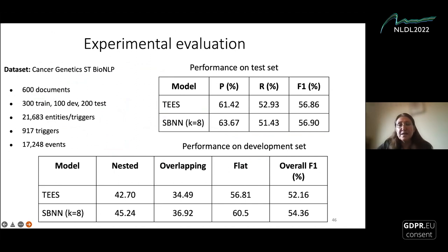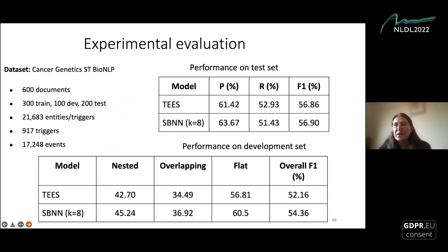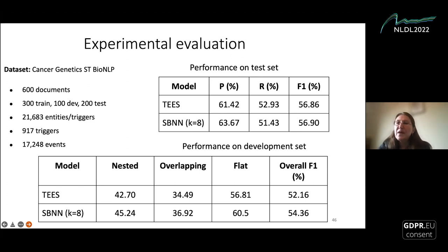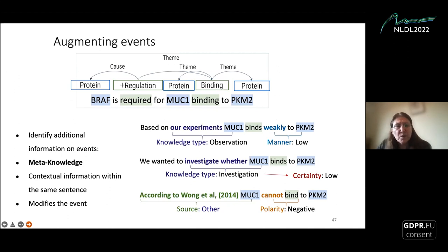Regarding the beam search results, we see better performance using this search technique compared with other models like TEES. The SBNN model is parameterized by a value K, which controls the width of the beam search — a high K value allows multiple paths to be expanded. Based on our observations, we wanted to extract different types of information from events, which we call epistemic or meta-knowledge.